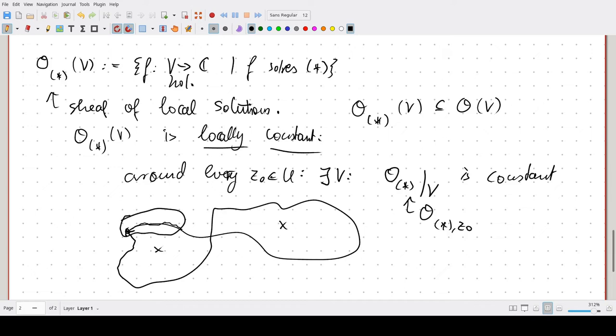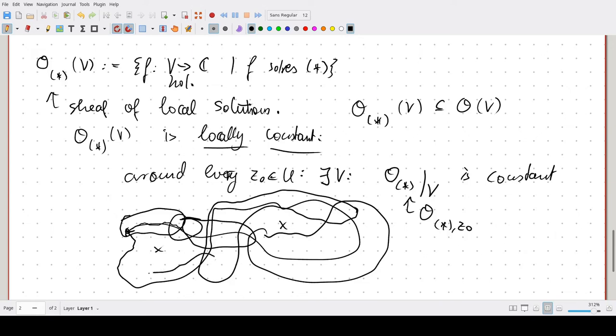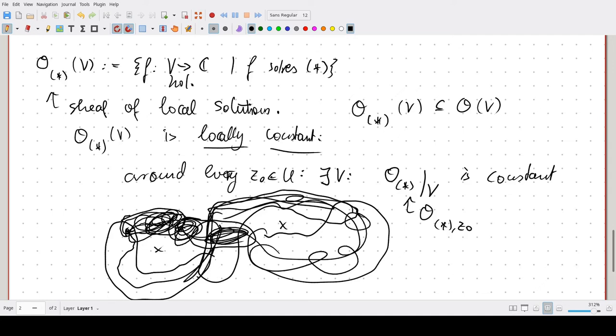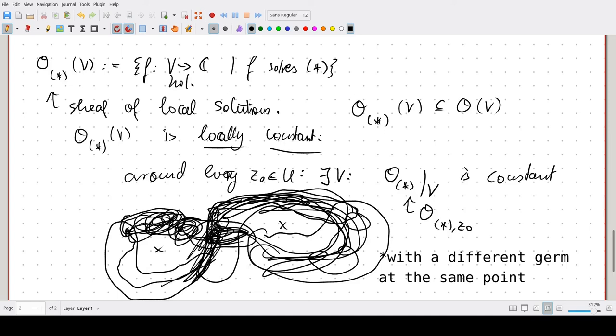Because if we say those are open sets on which our sheaf of solutions is a constant sheaf, you can first uniquely extend onto this set, then you can uniquely extend onto this set, onto this set, this set, and so on. And because you're moving along a path, after going along this loop you come back to the same point, but you might end up at a different value. But that's not a problem, because we're going along a path. Point being, every path induces an isomorphism between the stalks of the two endpoints.